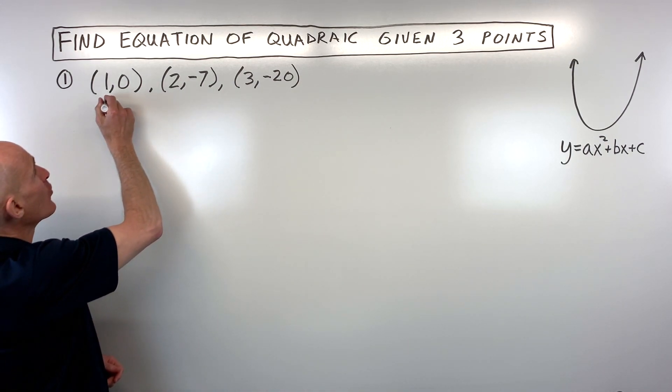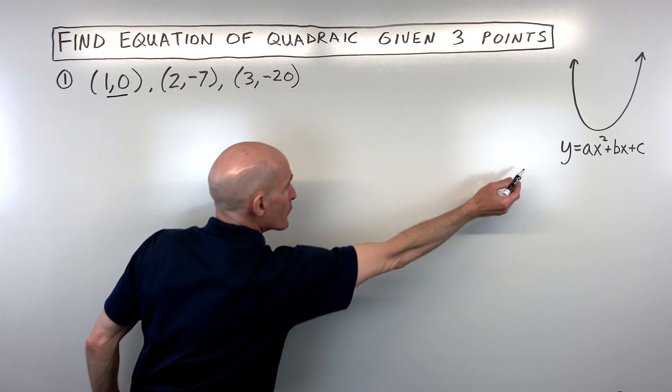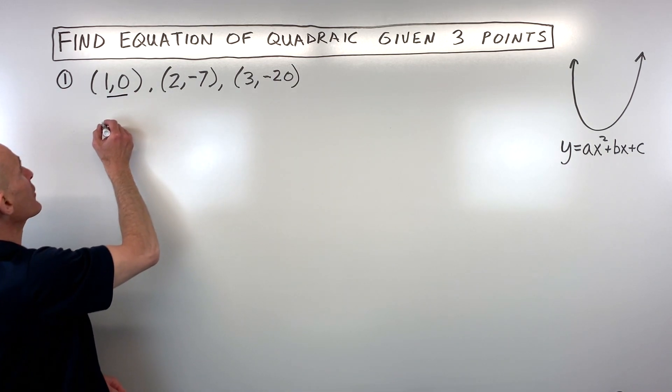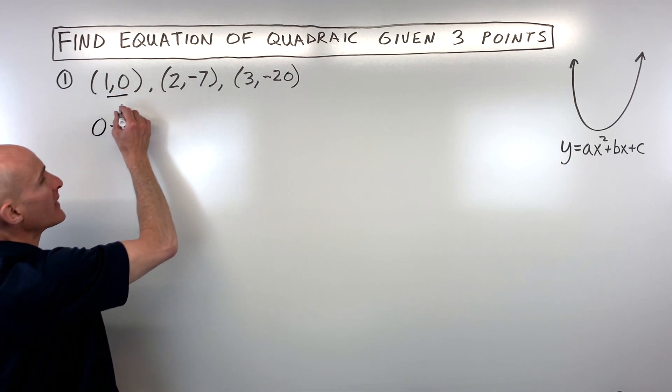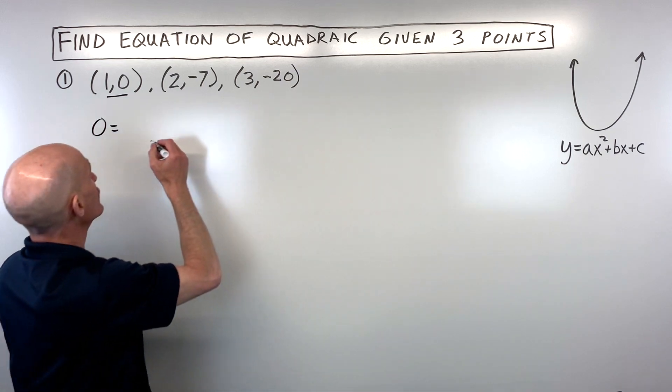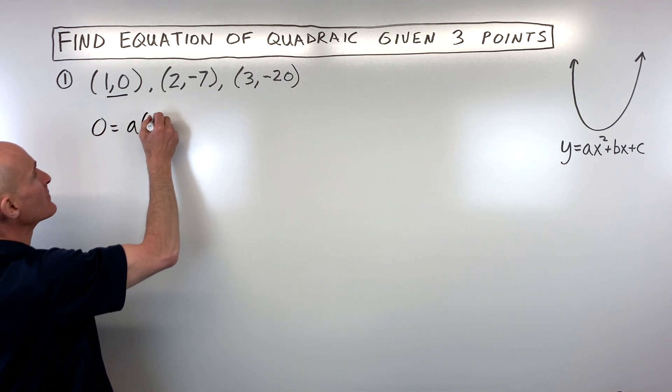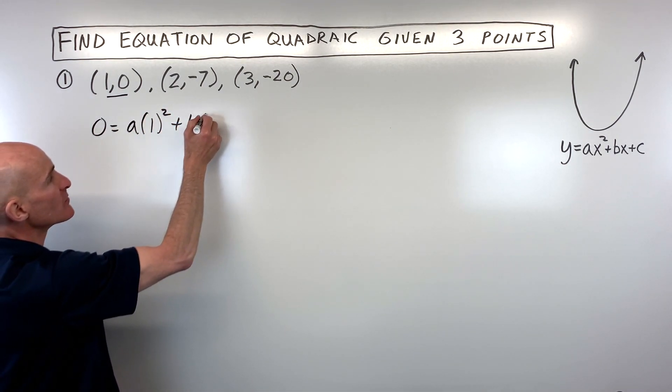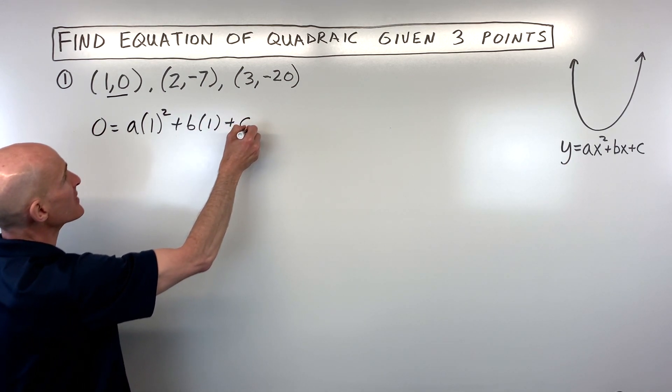So the first point here, one zero, I'm going to put zero in for our y variable and I'm going to put one in for x. So if we do that we're going to get a times one squared plus b times one plus c.